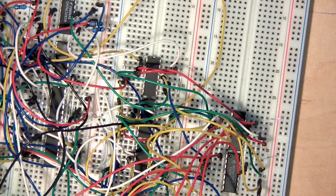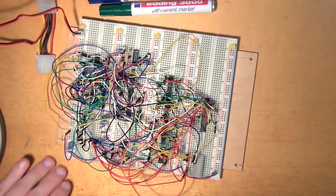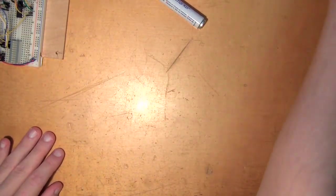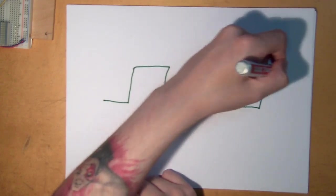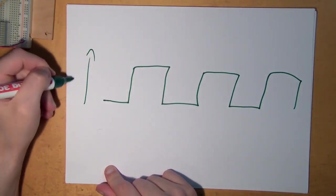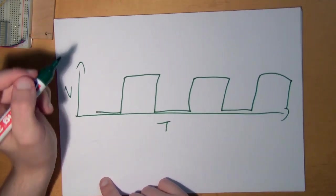Now in a perfect world we only deal with ones and zeros, but in reality we don't just have ones and zeros. If you look at the binary signal over time, in theory it should look something like this. Okay, this being voltage and this being time. In a perfect world, this right here is zero volts.